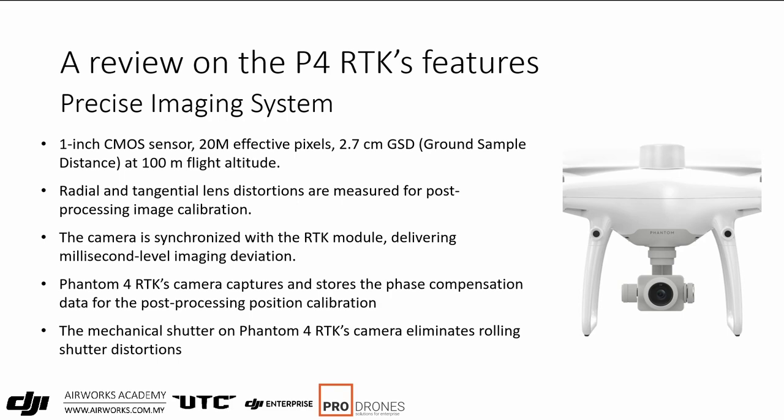The camera is synchronized with the RTK module, so when every image is captured you have a millisecond-precise GPS time record for post-processing. Because the antenna is at the top of the drone and the camera is at the bottom, depending on the roll and pitch the camera position can deviate by a few centimeters when the picture is taken. This deviation in centimeters is recorded into the same timestamping file, so you can achieve very precise positioning in post-processing.